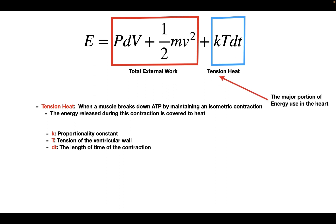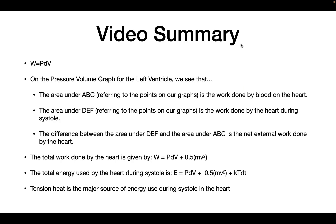Importantly, tension heat represents the majority of energy used by the heart during a beat. In summary, we covered pressure-volume work, the work done by blood on the heart, the work done by the heart during systole, net external work, total work including the kinetic energy component, and the total energy equation including tension heat. I hope this video helped you understand work done by the heart — thanks for watching and I hope to see you next time.